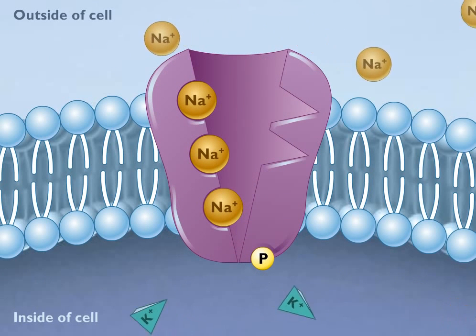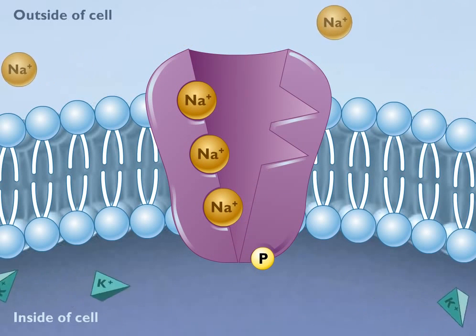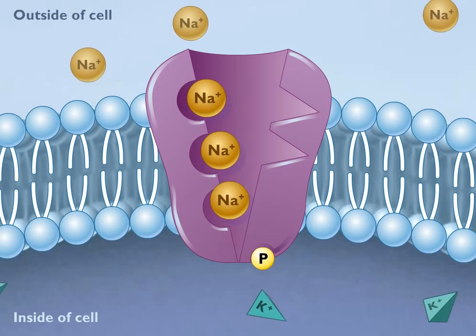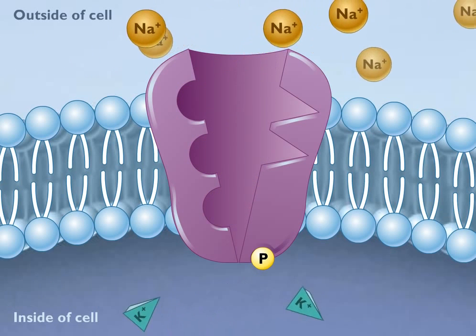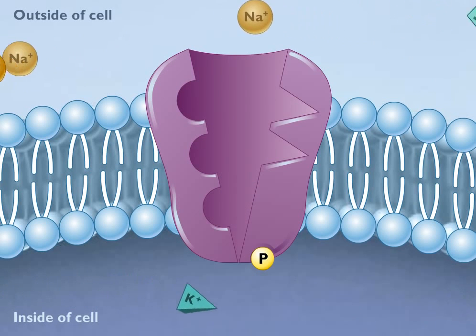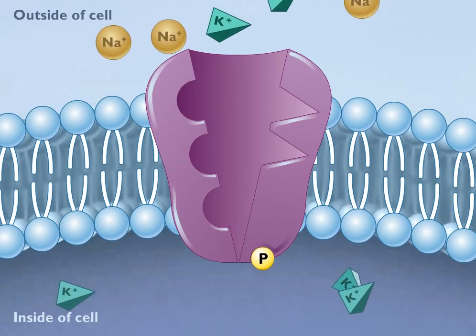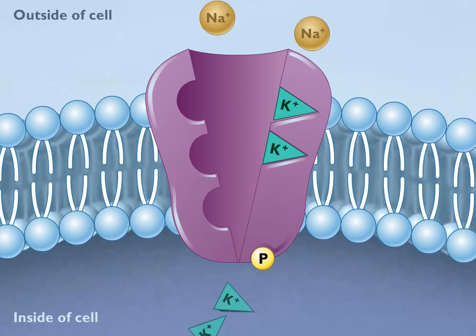One phosphate group from the ATP remains bound with the channel. The sodium ions are released on the other side of the membrane outside of the cell, and the new shape of the channel has a high affinity for potassium ions and two of these ions now bind to the channel.